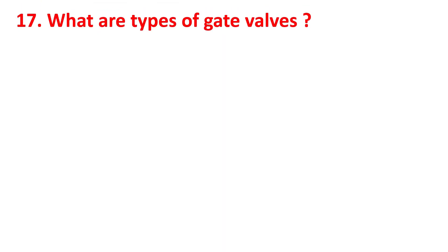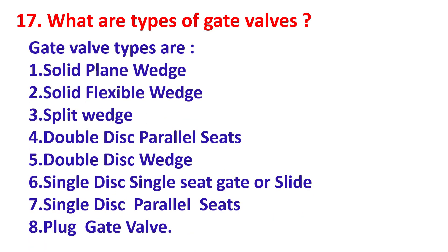What are types of gate valve? Gate valve types are: solid flat wedge, solid flexible wedge, split wedge, double disc parallel seats, double disc wedge, single disc, single seat gate or slide, single disc parallel seats, and plug gate valve.